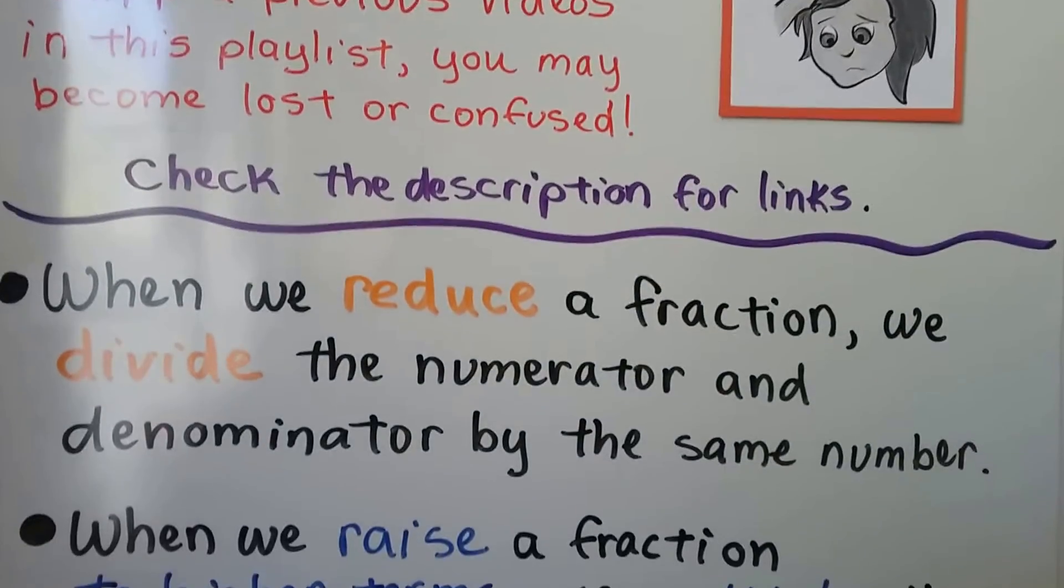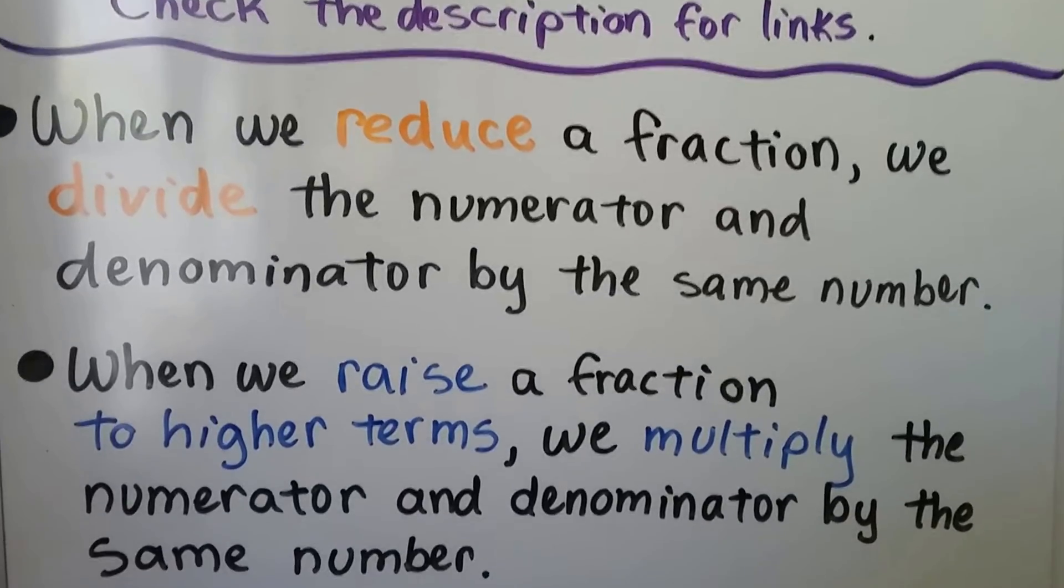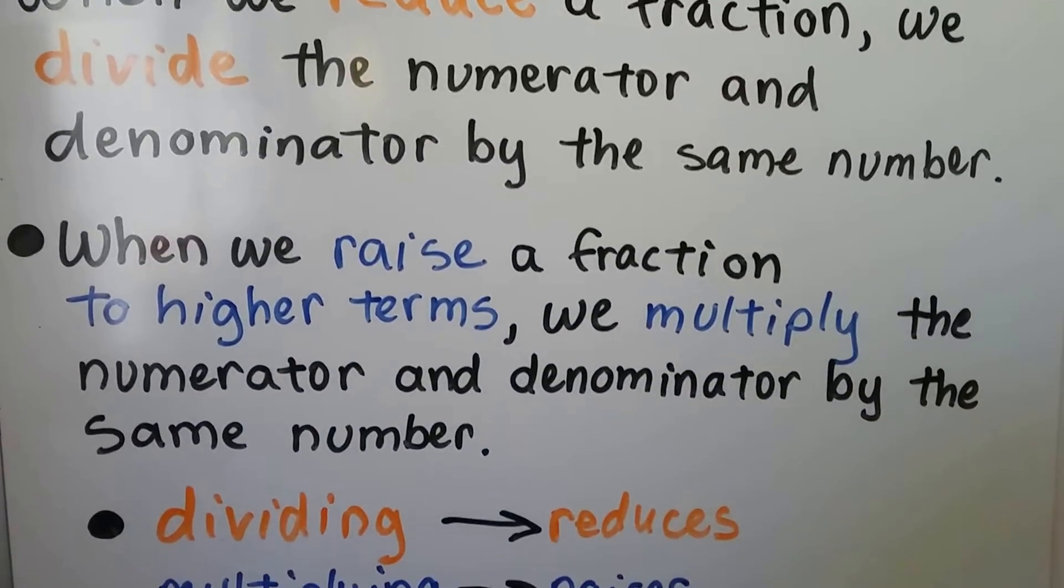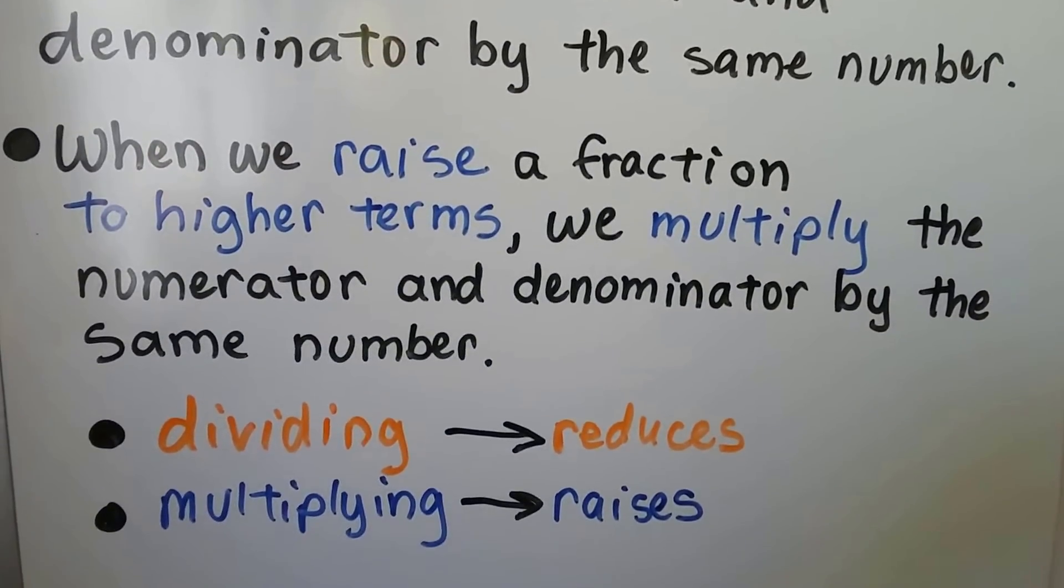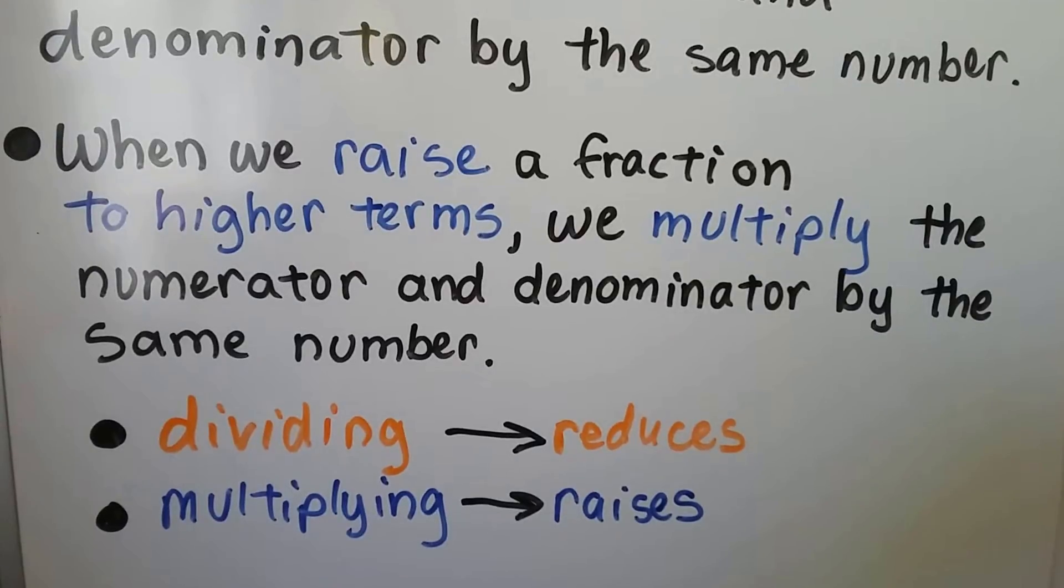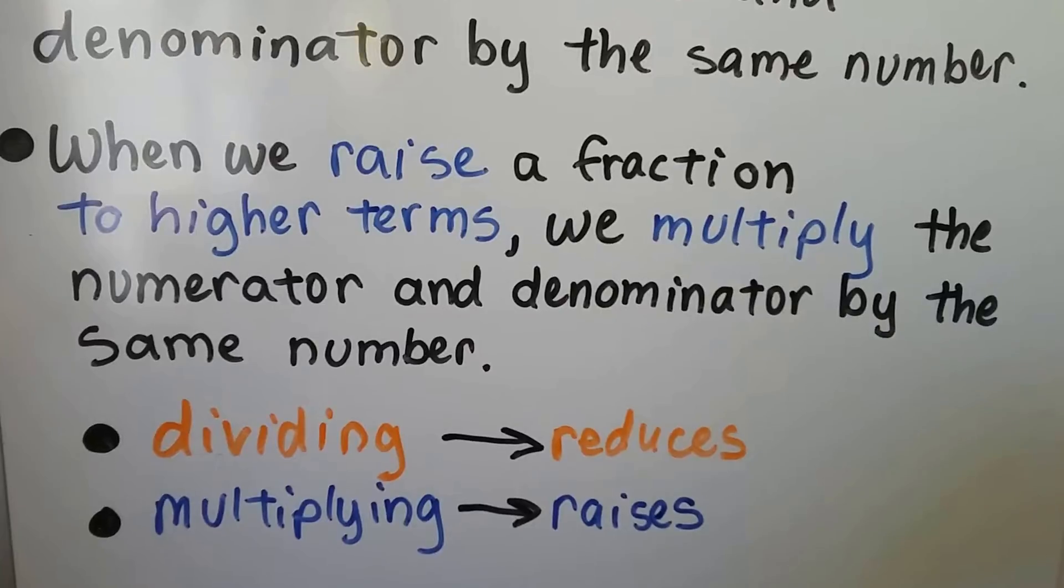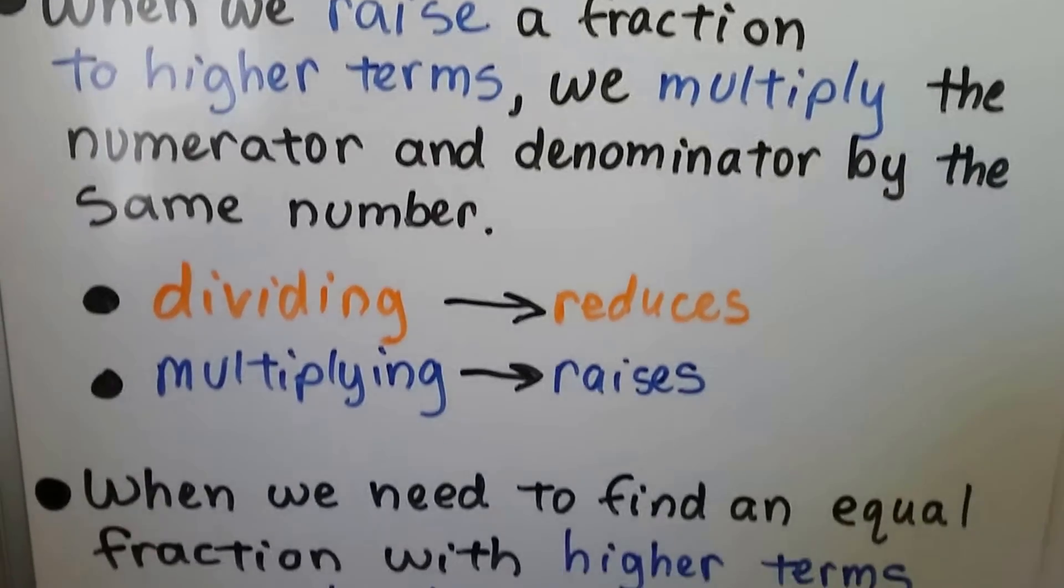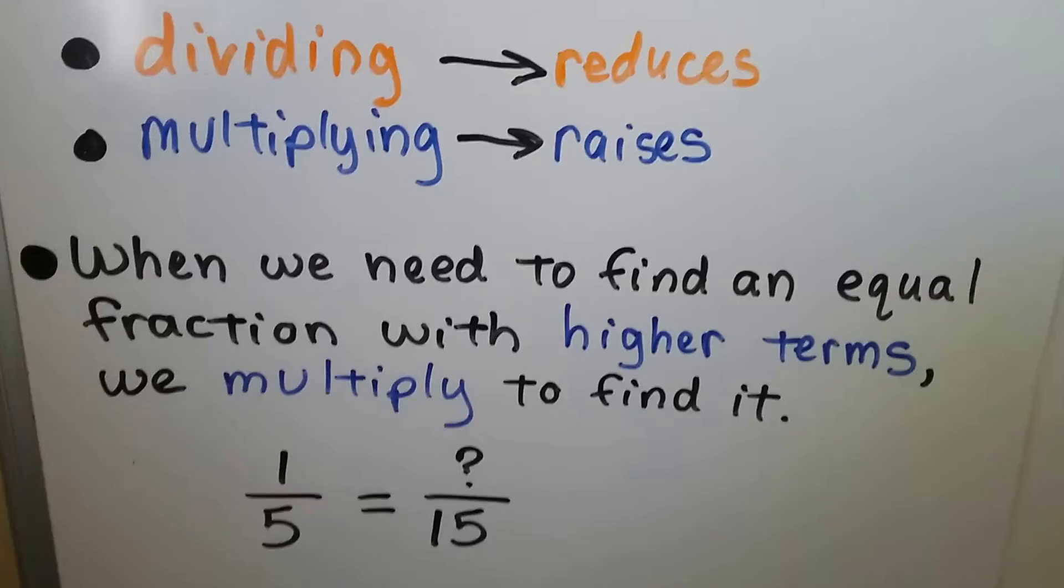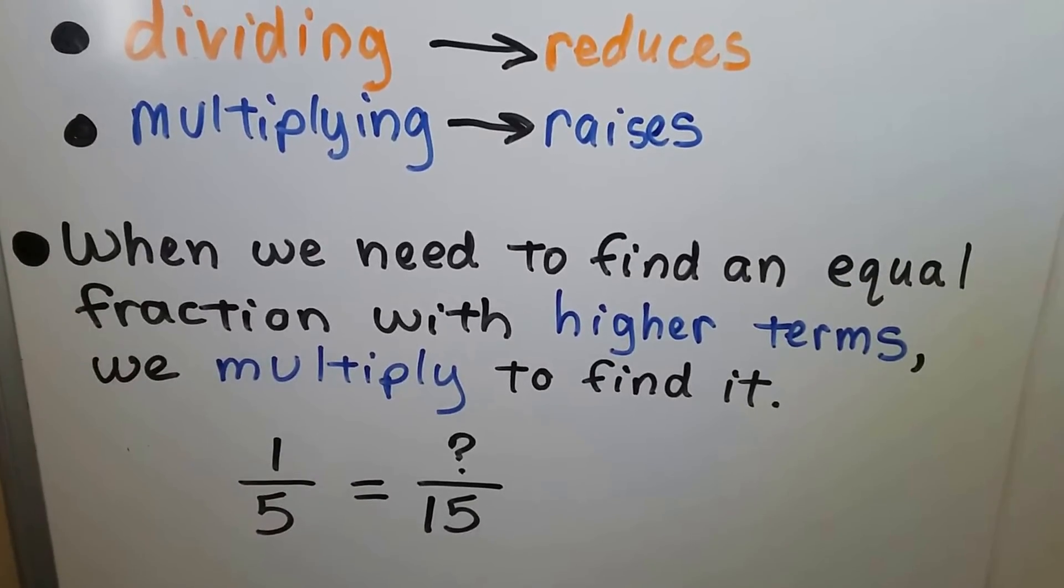So we learned in the last video when we reduce a fraction, we divide the numerator and denominator by the same number. When we raise a fraction to higher terms, we multiply the numerator and denominator by the same number. So dividing reduces, and multiplying raises. When we need to find an equal fraction with higher terms, we multiply to find it.